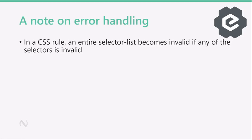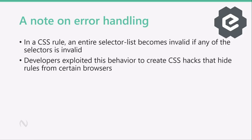In a normal CSS style rule, when you have a list of comma-separated selectors, if any one of them is invalid or unsupported by an older browser, the whole rule becomes invalid. So developers exploited this behavior to create CSS hacks. For example, some of the famous Internet Explorer hacks used `html > body something something` — this was to hide rules from IE6, which didn't support the child combinator. And this worked very well even if you had a longer selector list, because you just needed to use the hack once to invalidate the whole rule and hide it from IE6.